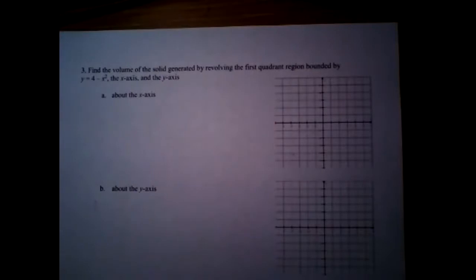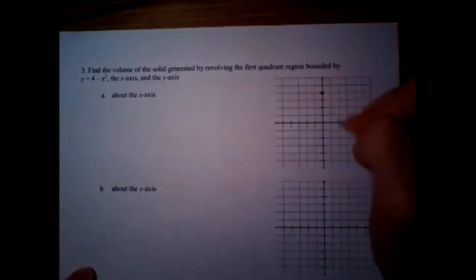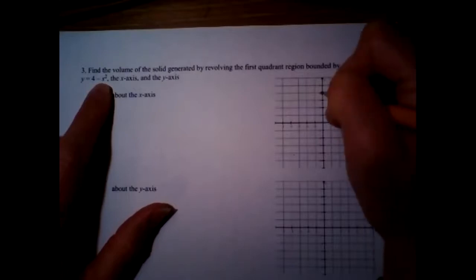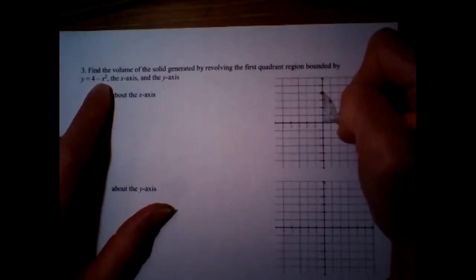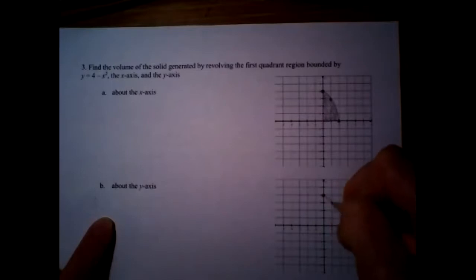All right, are we hanging in there? I kind of like these ones — it's nice because they're all circles, you don't have to worry about different shapes. Number three: find the volume of the solid generated by revolving the first quadrant region bounded by y = 4 − x². That's a reflected parabola shifted up 4. Going up 4, plug in 1 gives 3, plug in 2 gives 0. Staying in the first quadrant, this is our shape. I'll sketch it again for part B.